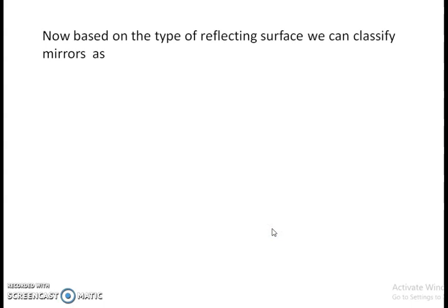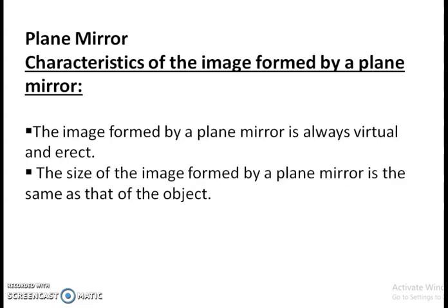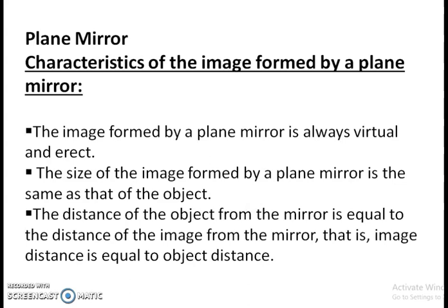Based on the reflecting surface, we classify mirrors as plane mirror, concave mirror, and convex mirror. First, the plane mirror. The image formed by a plane mirror is always virtual and erect. The size of the image formed on a plane mirror is the same as that of the object. The distance of the object from the mirror is equal to the distance of the image from the mirror — that is, the image distance equals the object distance.